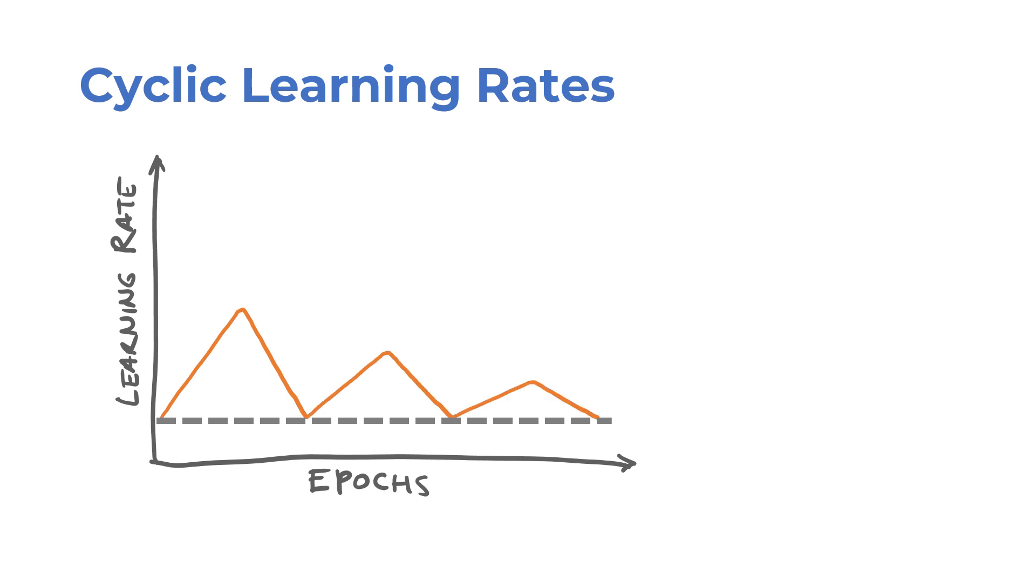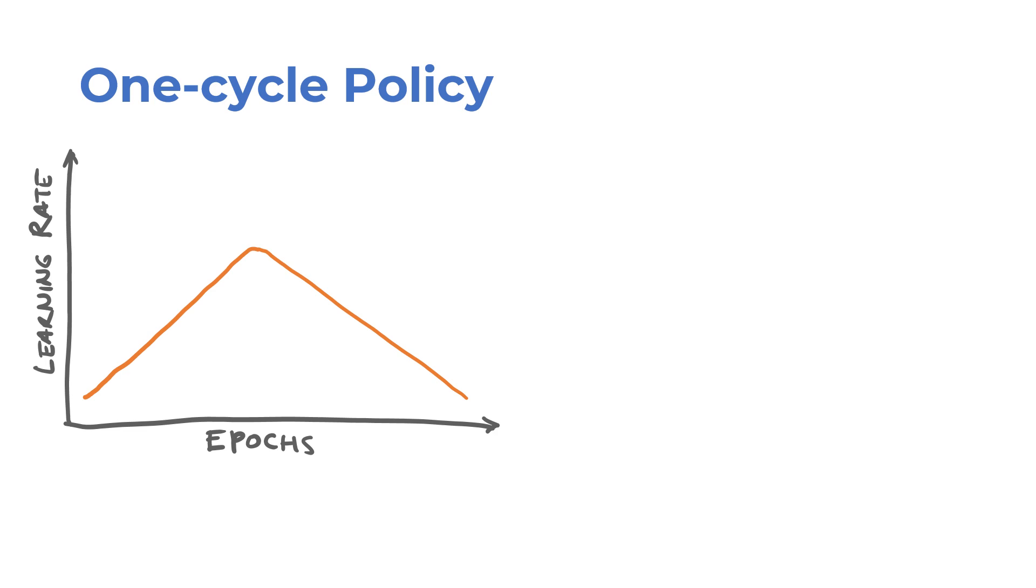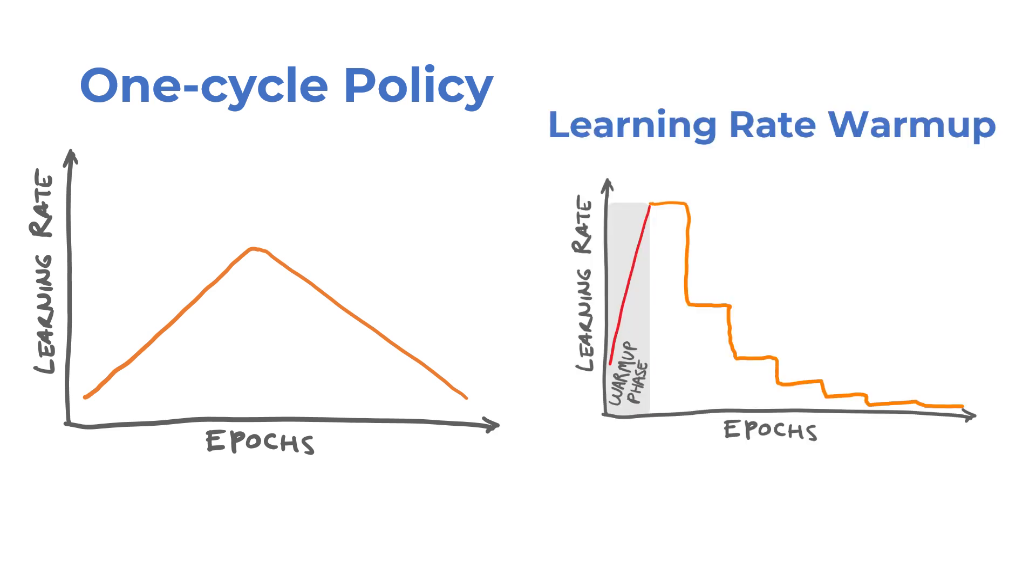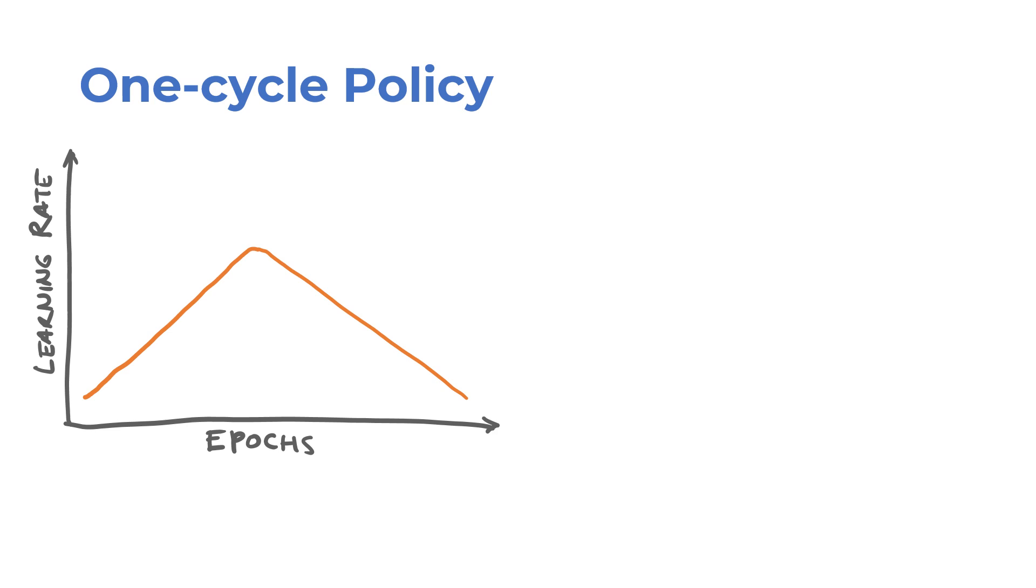A variant of this idea is the one-cycle policy that increases and decreases the learning rate in a single cycle during the entire training process. This is somewhat similar to the learning rate warmup that we talked about earlier. The one-cycle policy is also applied to the momentum parameter in the optimizer, but in the reverse order.